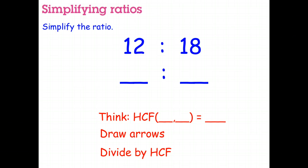I want to simplify the ratio 12 is to 18. So here's what I'm thinking is what is the highest common factor of 12 and 18. So normally I don't write this down. I just think it. Well, two goes into both of those. But the biggest number that goes into both of those is six. So the highest common factor is six.